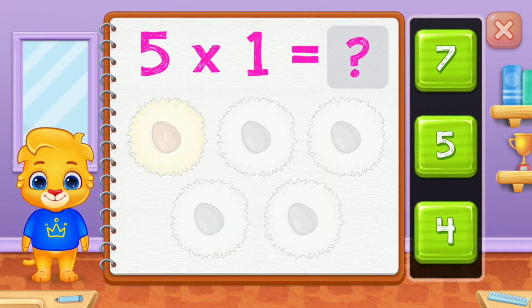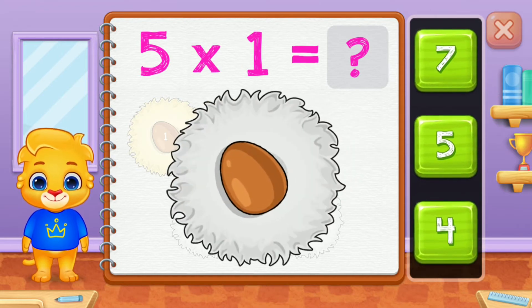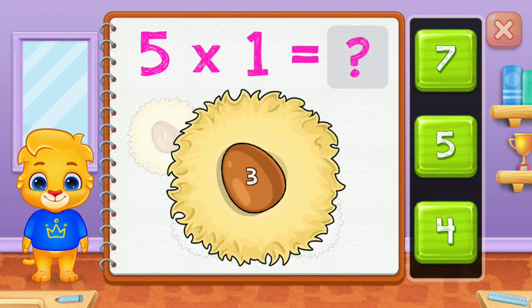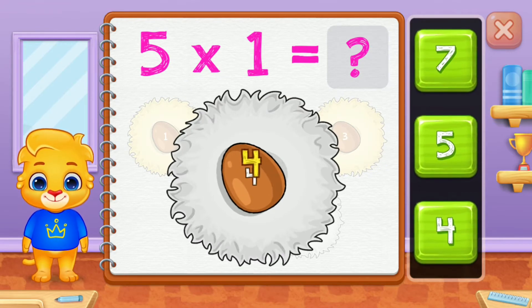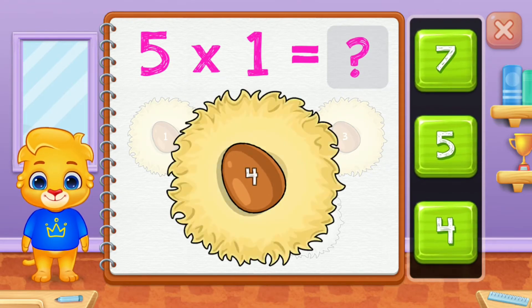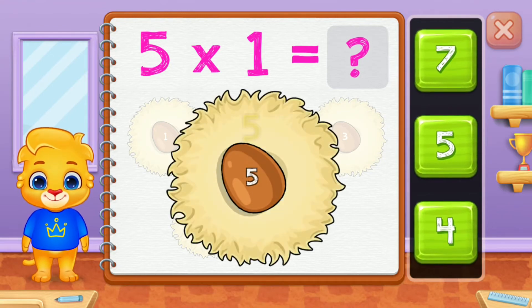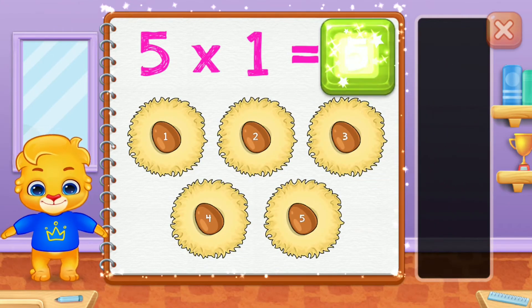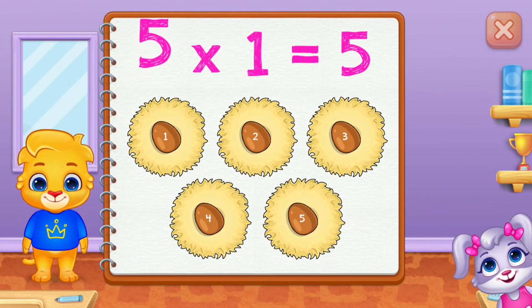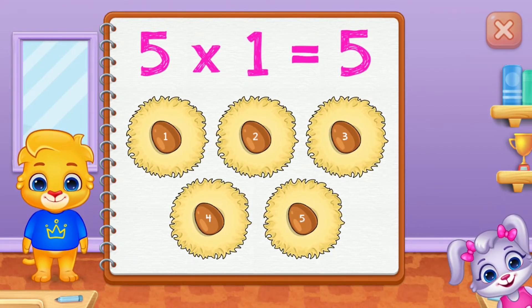One, two, three, four, five. Five groups of one equals five.